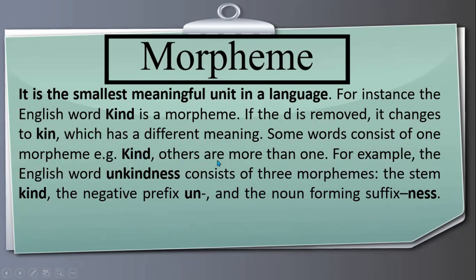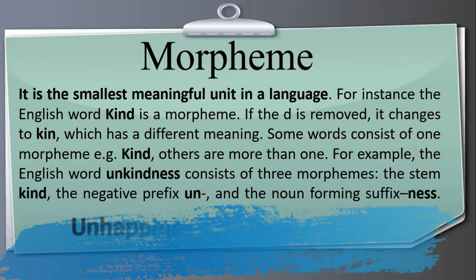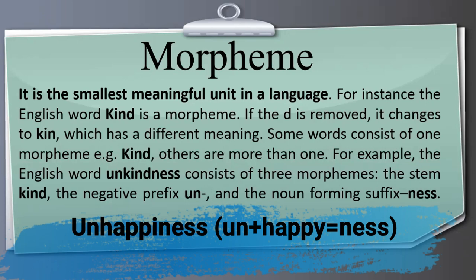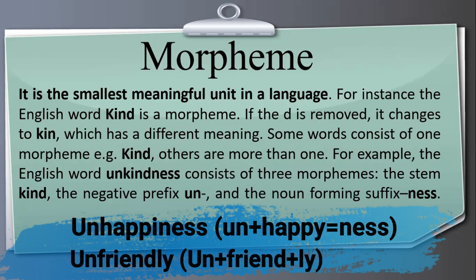Some words consist of one morpheme, like 'kind'. Others consist of more than one. For example, the English word 'unkindness' consists of three morphemes: the base word 'kind', the negative prefix 'un', and the noun-forming suffix 'ness'. Similarly, 'unhappiness' can be divided into prefix 'un', the base word 'happy', and suffix 'ness'. And 'unfriendly' can be subdivided into prefix 'un', base word 'friend', and suffix 'ly'. This study in linguistics is called morpheme.